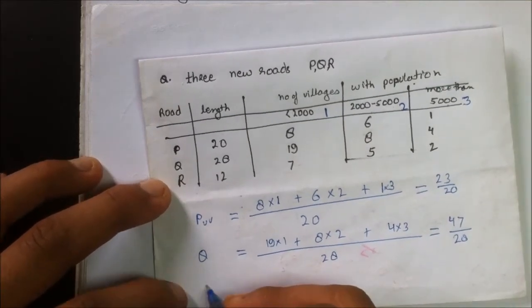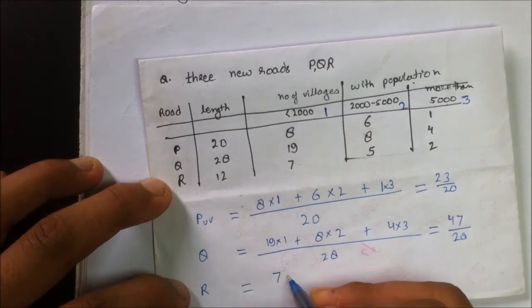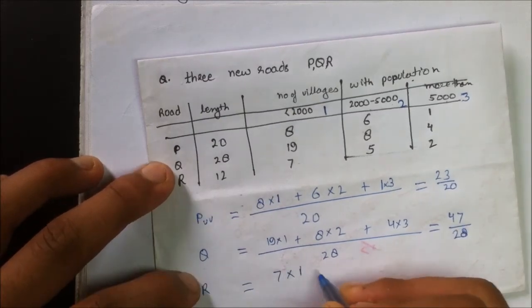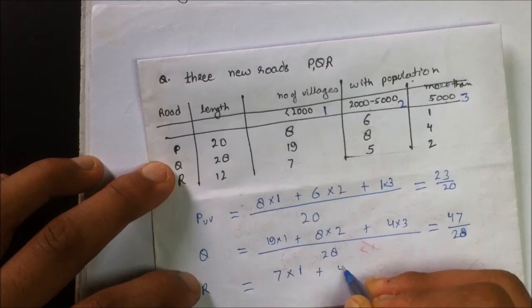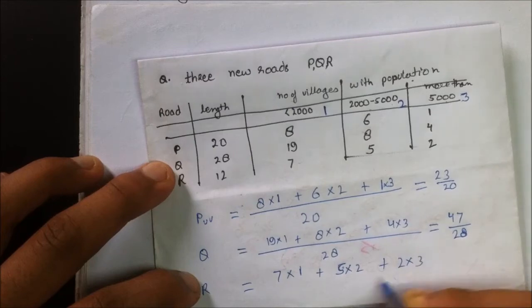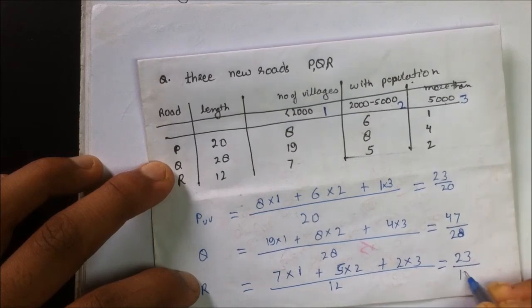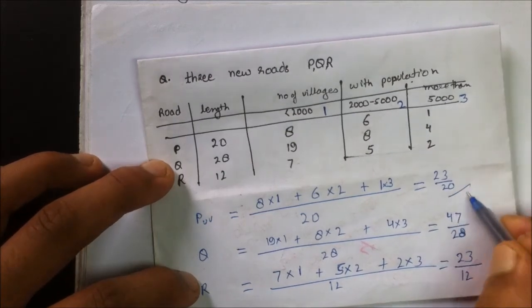For R, that is equals to 7 times 1 plus 5 times 2 plus 2 times 3 upon 12, which equals 23 by 12.